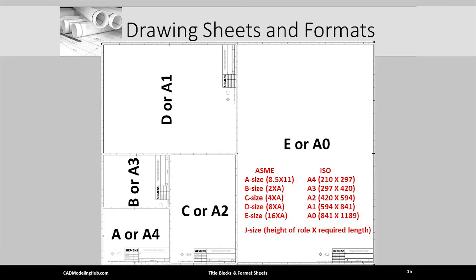And finally, an E or A0 piece of paper is twice the size of a D. Other larger letter size format sheets exist. However, most companies just jump to a J size format.